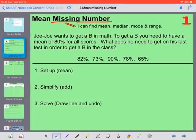So it says JoJo wants to get a B in math. To get a B, you need to have a mean or an average of 80% for all scores. So this is what the mean needs to be. What does he need to get on his last test in order to get a B in the class? So we have 1, 2, 3, 4, 5 test scores already. He has another one that he doesn't know that he needs to figure out what does he need to get in order to get an average of 80%.